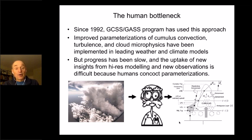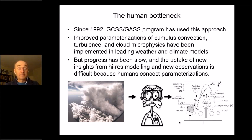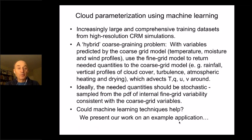Progress has been slow because the human in the middle of this process is a bottleneck — we can't take in the complicated information in these simulations and turn it into parameterizations easily, and there are very few people trained to do that. So that suggests we should use machine learning for this problem.